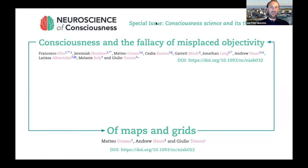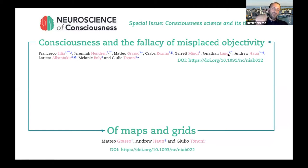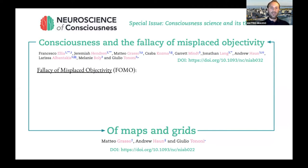The paper appeared in the special issue 'Consciousness Science and Its Theories' in Neuroscience of Consciousness. It is a companion paper to another paper called 'Consciousness and the Fallacy of Misplaced Objectivity.' To tell you what 'Of Maps and Grids' is about, I'd like to spend a moment on the fallacy of misplaced objectivity, because the two papers really go as a pair.